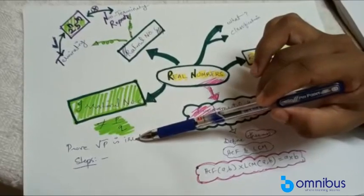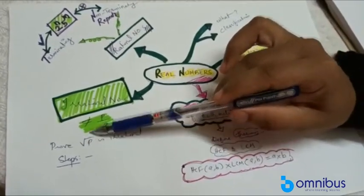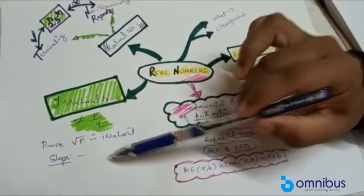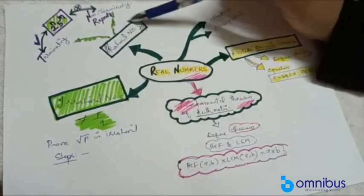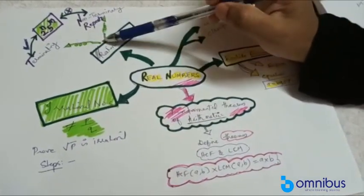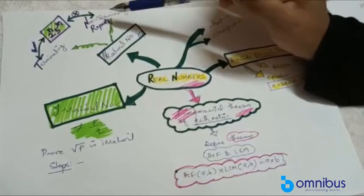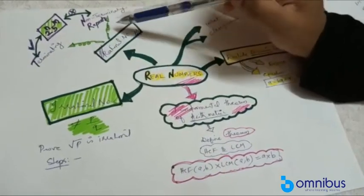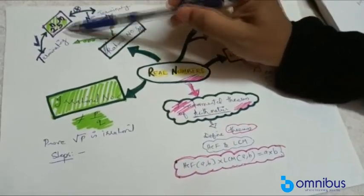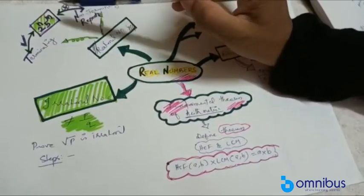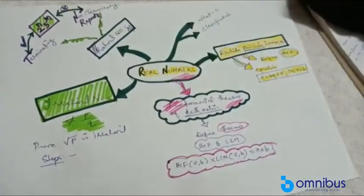Now I will ask the important question: prove that any root of a prime p is irrational. Those are the key steps. The next topic is rational numbers. What type? Terminating and non-terminating and repeating. This is the main thing — the theorem involving 2 raised to n and 5 raised to m.